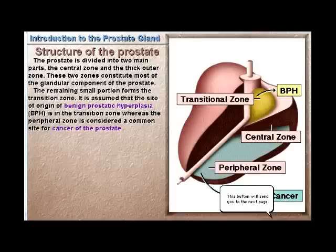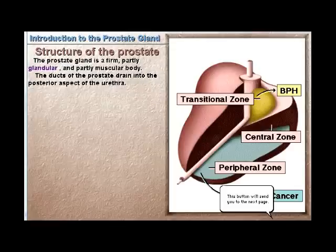The prostate is divided into two main parts: the central zone and the thick outer zone. These two zones constitute most of the glandular component of the prostate. The remaining small portion forms the transition zone. It is assumed that the site of origin of benign prostatic hyperplasia (BPH) is in the transition zone, whereas the peripheral zone is considered a common site for cancer of the prostate.